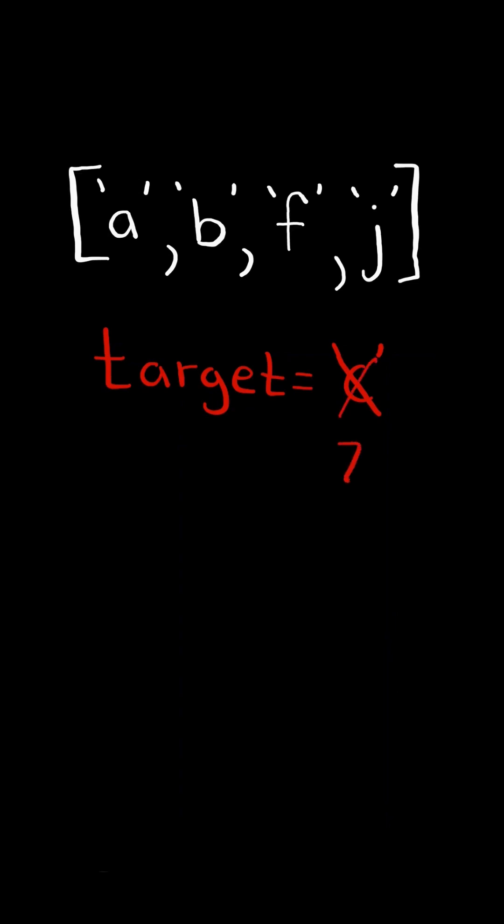Suppose the target was zed. There is no character that is greater than target, so we return the first character by default.